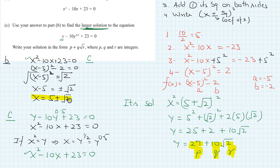The value of x from part b is 5 plus or minus root 2, a is minus 5 and b is minus 2. Thank you very much for watching and don't forget to subscribe to my channel.